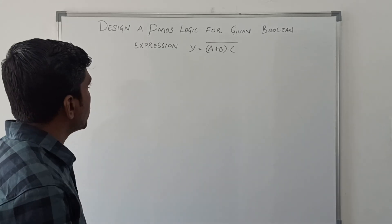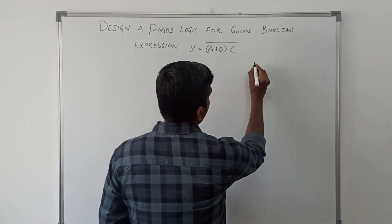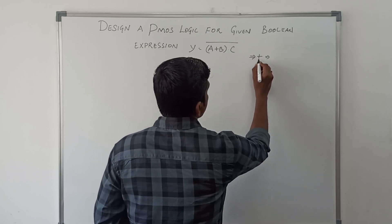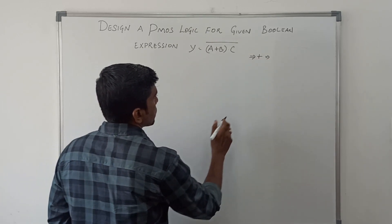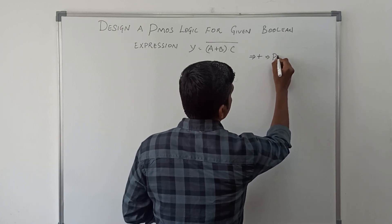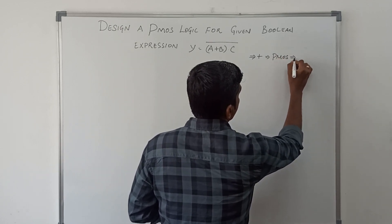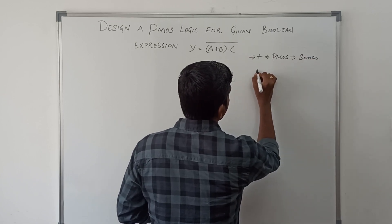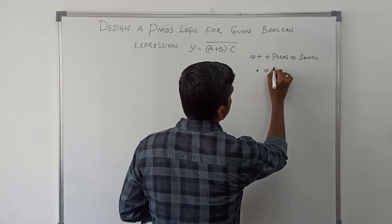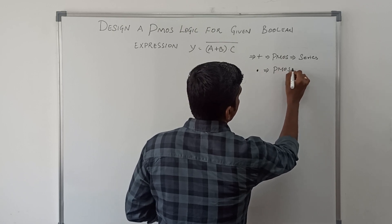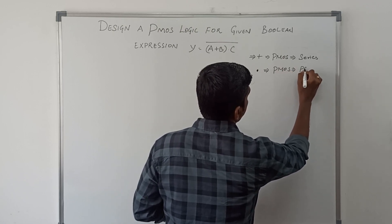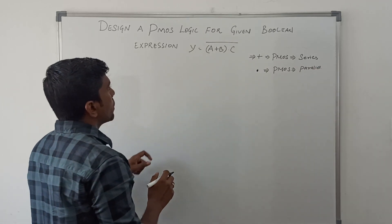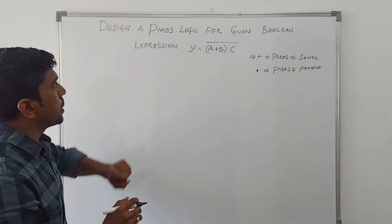Before drawing the PMOS logic, first I will write the rules. If the plus operator is present in the boolean expression, the PMOS transistors connect in series. If the dot operator is present in the boolean expression, the PMOS transistors connect in parallel. These two rules we are going to follow to draw the PMOS logic.